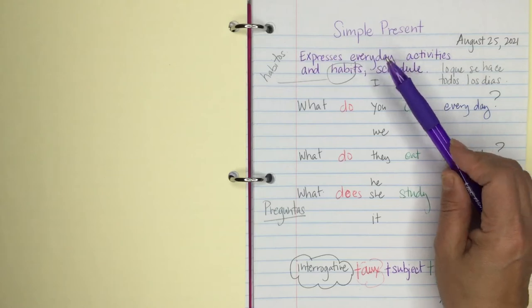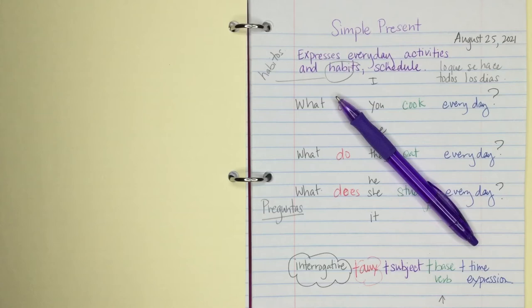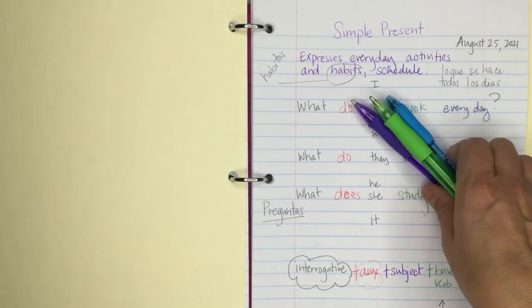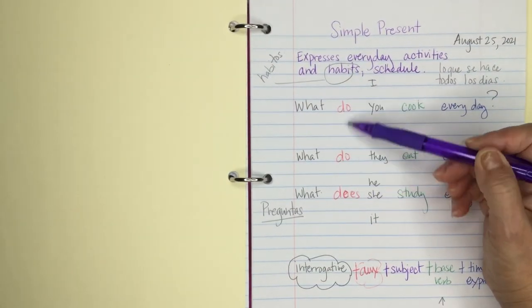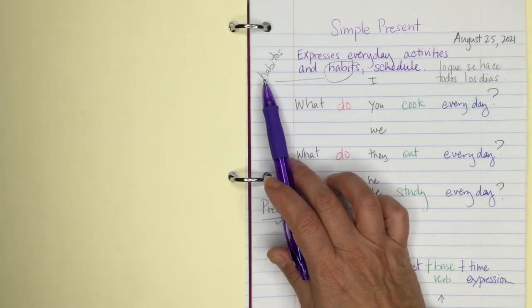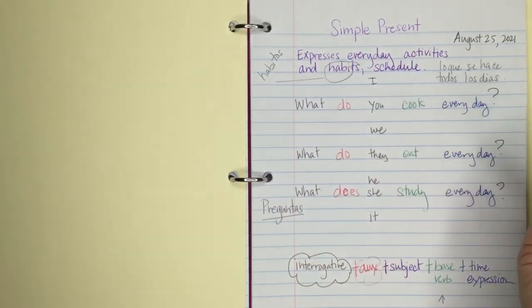This is where I like to have different colored pens because it helps me remember things. Like, if I always put the auxiliary in red, I know this is a very important part of a question.